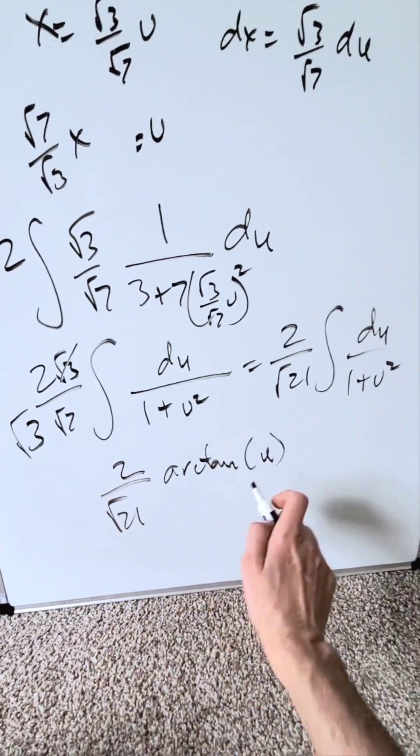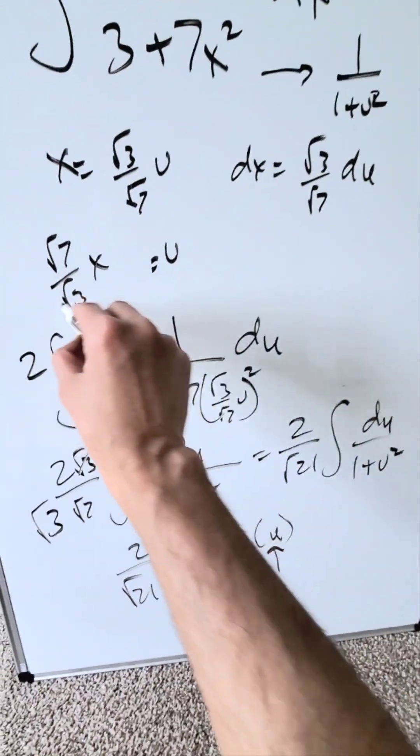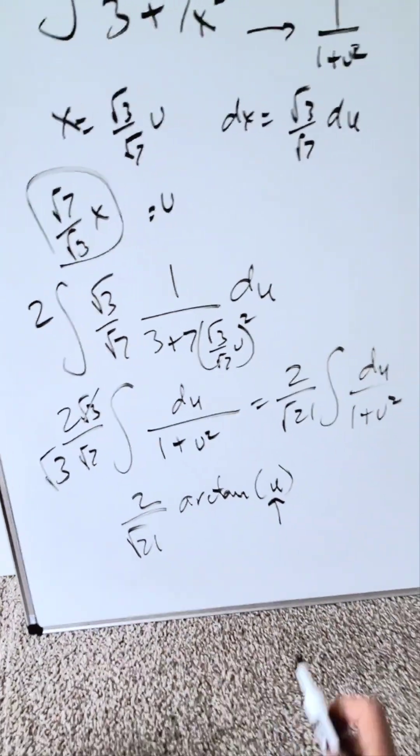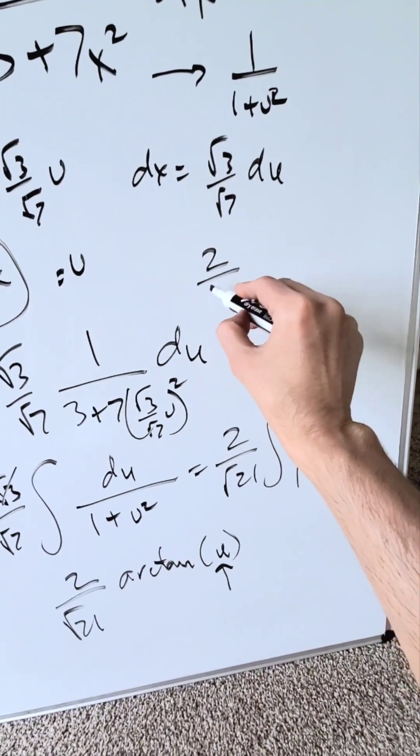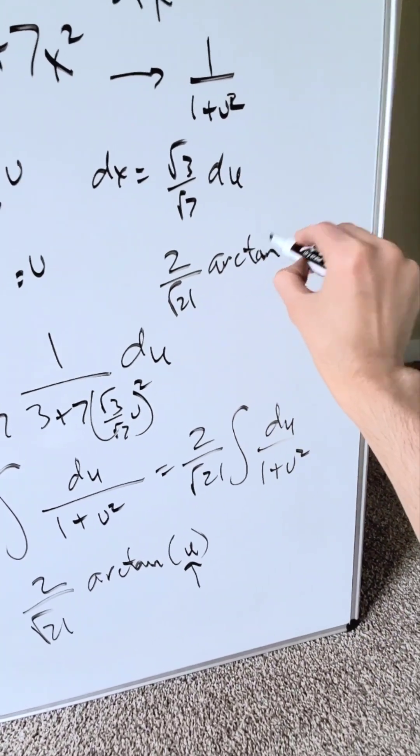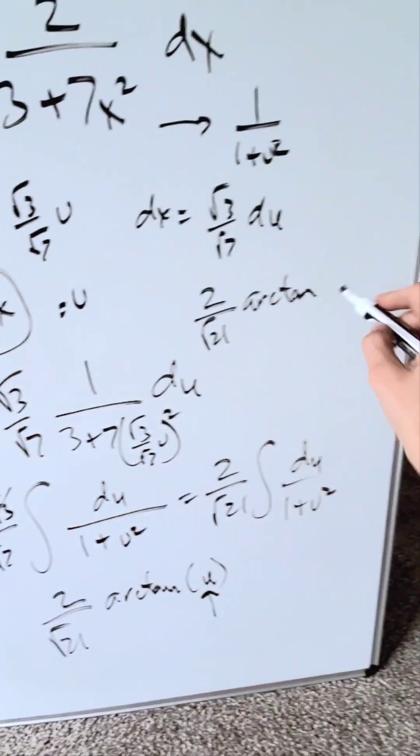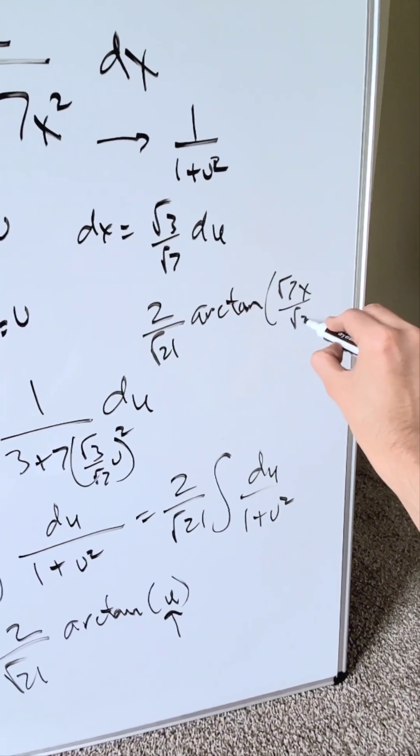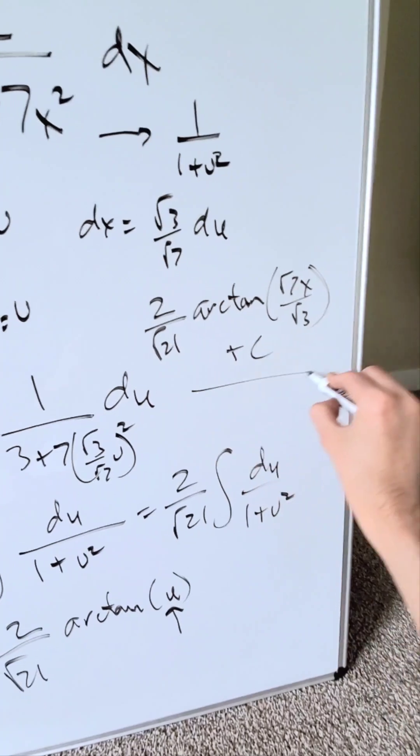2 divided by root 21. You'll resubstitute u. What was u? u was equal to all of that. We'll push our answer here. We have a 2 over root 21, arctan u. But I know arctan u is equal to this. I have here a root 7x over root 3 plus c.